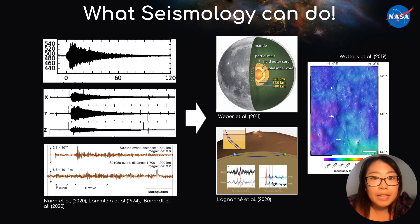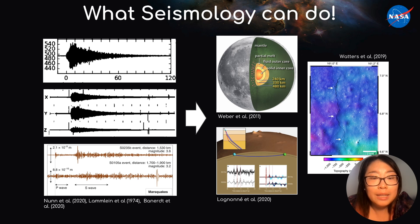From these data, seismologists pieced together so much about these planetary bodies, including, but not limited to, the structure of the lunar regolith, tectonic processes on the surface of Mars, and the interior compositions of both.